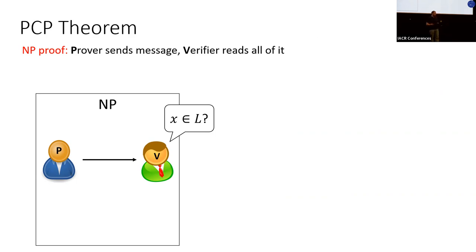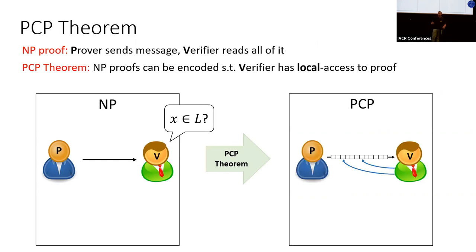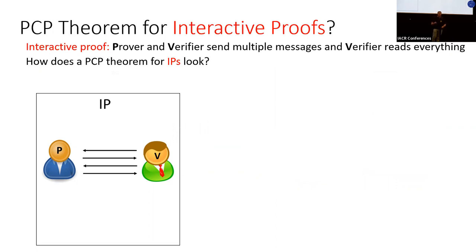In an NP proof system, a verifier wants to know the validity of some statement. The prover sends over some message, the verifier reads the entire message, and decides whether it's convinced or not. The PCP theorem tells us that if the prover encodes its message in a specific way, then the verifier can be convinced even while reading just a few bits from the proof. An interactive proof is a generalization of an NP proof system where the verifier and prover have a longer conversation with multiple messages.